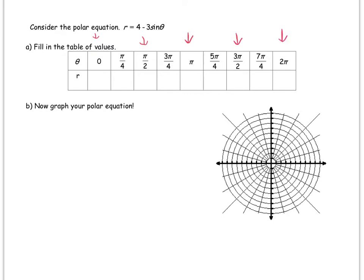The cosine or the sine of zero is zero, so the first value would be 4 minus 3 times 0, which is 4. π over 2: 4 minus 3 times sine of π over 2. Well, sine of π over 2 is 1, so that's 4 minus 3 times 1, which is 1. Sine of π is 0, so that's 4 minus 3 times 0, which is 4. 3π over 2: the sine of 3π over 2 is negative 1, so it's 4 minus 3 times negative 1, which is 4 plus 3. So that's 7.